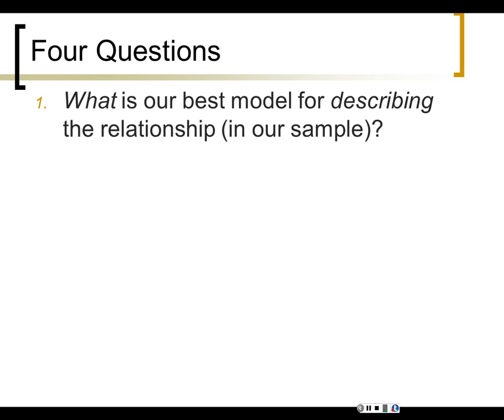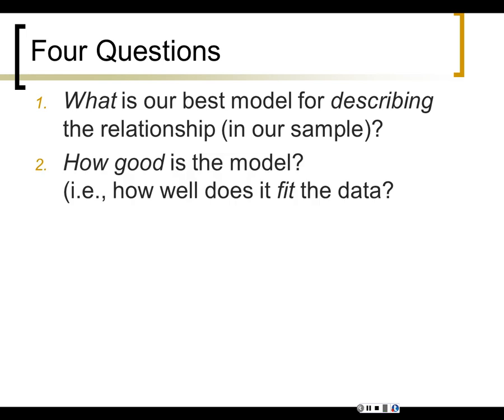You could think of what we've been doing so far as four questions. First, the descriptive question: what is the best model for describing the relationship between x and y in our sample? That's where we come up with the correlation coefficient and the regression equation. Then: how good is the model? How well does it fit the data? This might seem like inference but it's not — it's still description. We use R-squared and residuals to tell us how well the model fits the data.